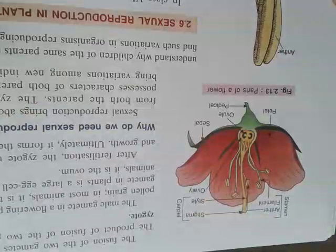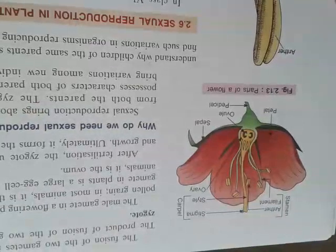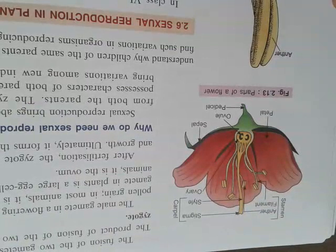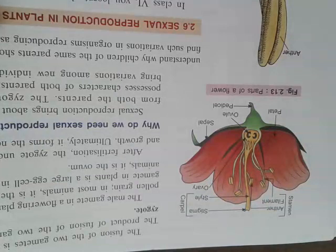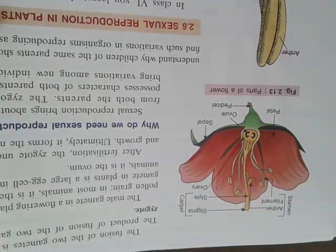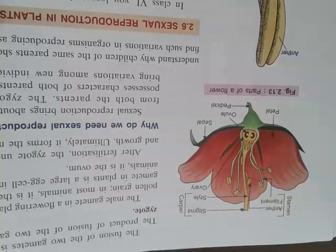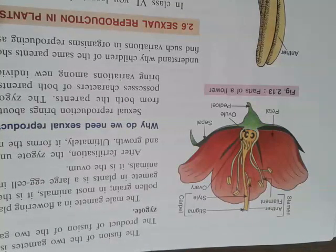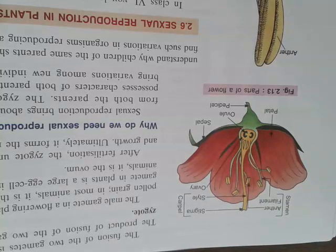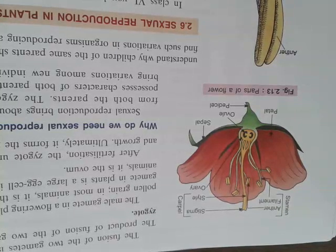As we know from the previous class, it is a complete flower having four parts: androecium, gynoecium, calyx, and corolla. From these four parts, the gynoecium is your female reproductive part and the androecium is your male reproductive part. The androecium contains pollen grains; it has the anther, and this anther produces the pollen grains. After the pollen grains come from the anther to the stigma, pollination takes place.